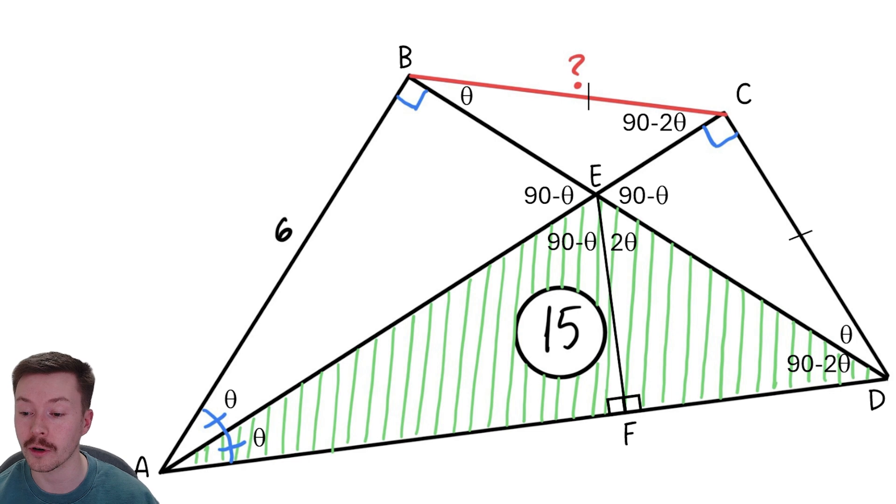Okay, now from there if we look at triangles ABE and AEF, they have the same angles in them and they share a side A to E. Therefore, they are congruent triangles, hence A to F has to also be 6.